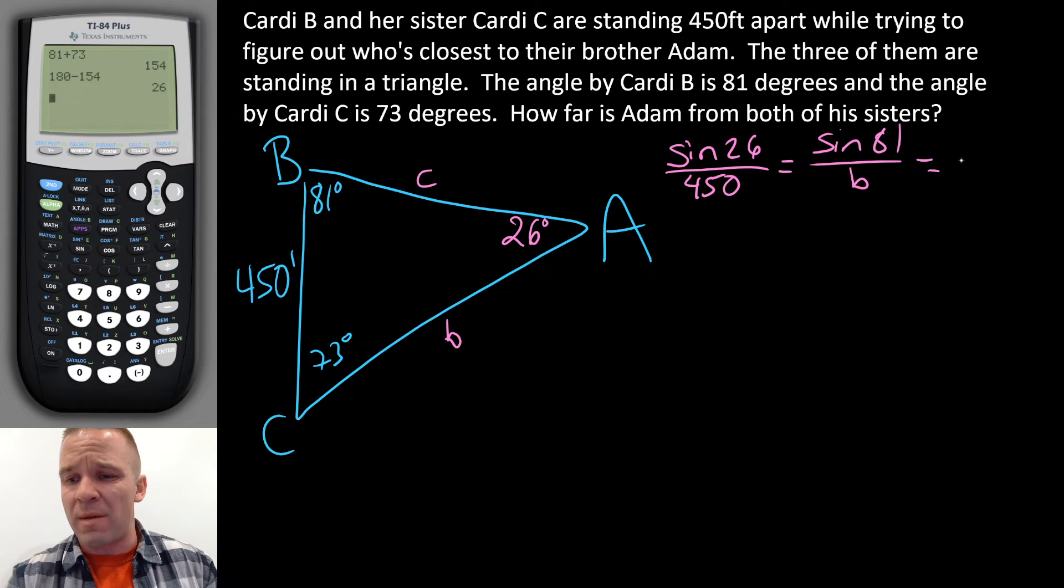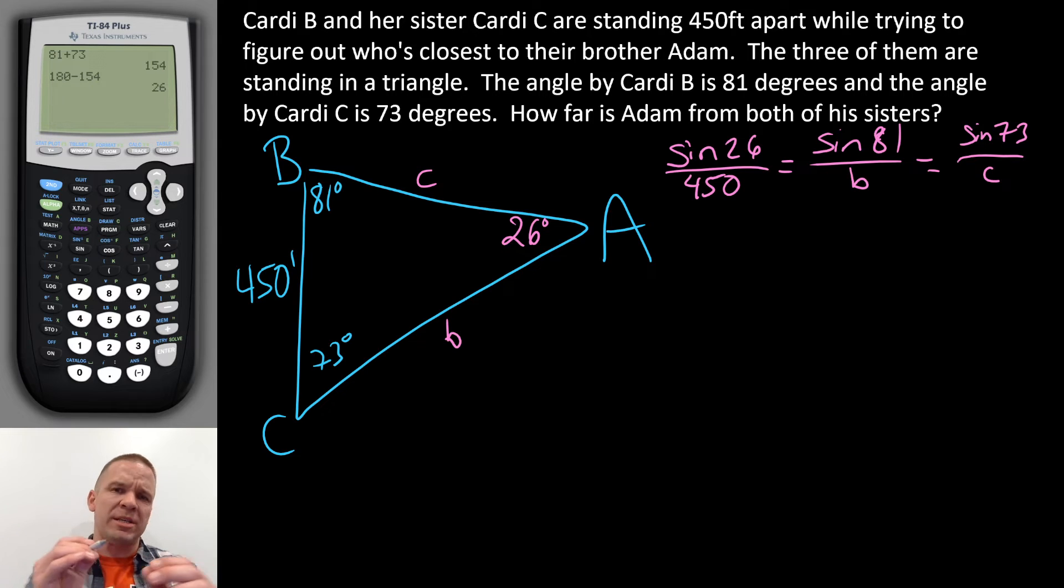And I'm going to just lay down my other ratio for this proportion here. We got 73, sine of 73 divided by c, that length right there. Let's not mix up our b's and c's. We got it labeled on the triangle. So we know the context of the problem as well.